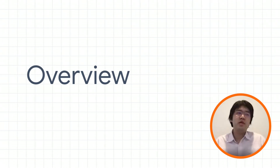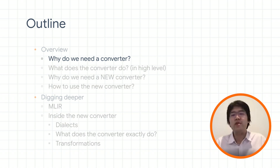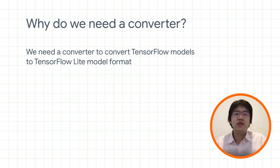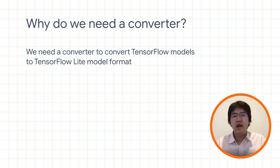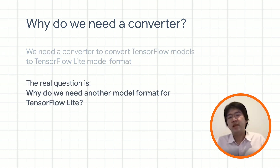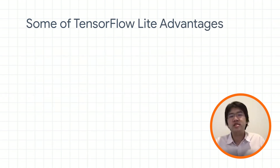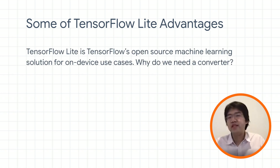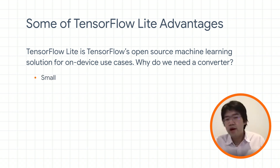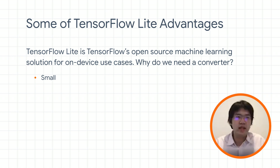The first question I want to talk about is: why do we need a converter? The short answer is we need a converter to convert a TensorFlow model to TensorFlow Lite model format — but that essentially explains nothing. To answer why we need another format for TensorFlow Lite, we need to look at what the advantages of TensorFlow Lite are. TensorFlow Lite is TensorFlow's open source machine learning solution for mobile and small devices. It's small and fast, with small memory footprint and low power consumption.